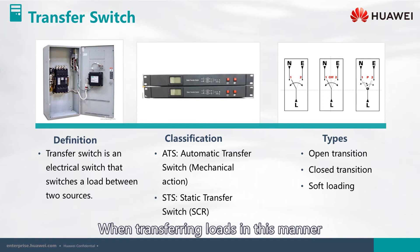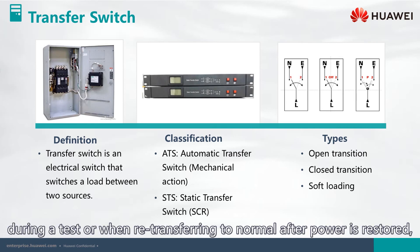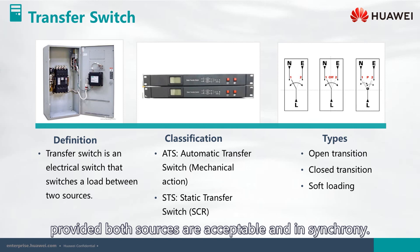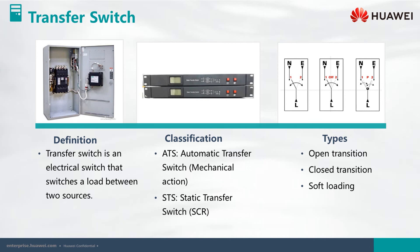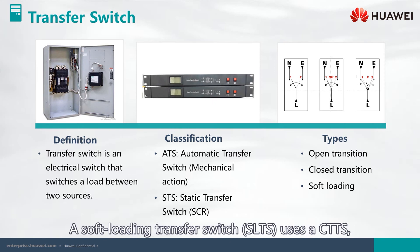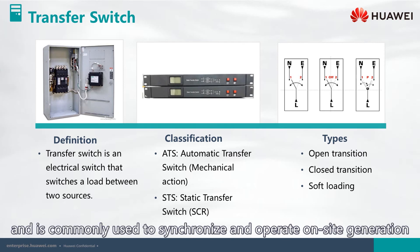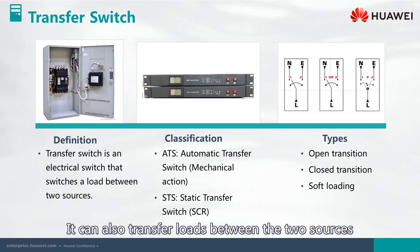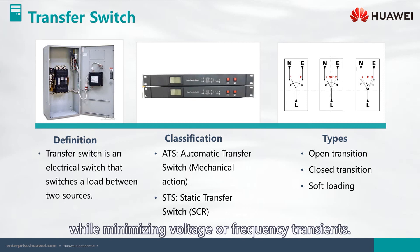When transferring loads during a test or re-transferring to normal after power is restored, the switch operates in make-before-break mode, provided both sources are acceptable and in synchrony. A soft loading transfer switch, SLTS, uses a CTTS and is commonly used to synchronize and operate on-site generation in parallel with utility power. It can also transfer loads between the two sources while minimizing voltage or frequency transients.